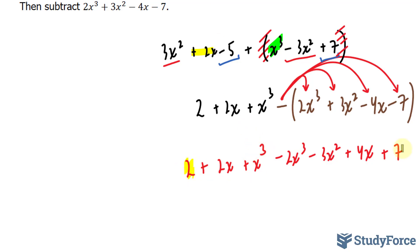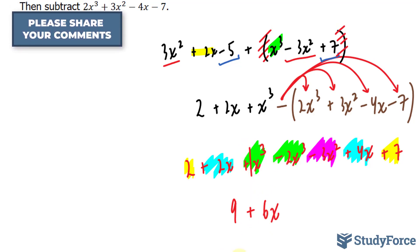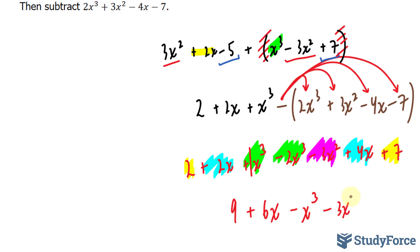This one and this one are alike. This one, this one are alike. This term and this term are alike. They both have x to the power of 3. And this term is on its own. Let's start with the yellow. 2 plus 7 is equal to 9. 2x plus 4x is equal to 6x. These two are alike. This has a coefficient of 1 even though it's not written. 1 minus 2 is negative x to the power of 3. And this one, given that it's on its own, is minus 3x squared.